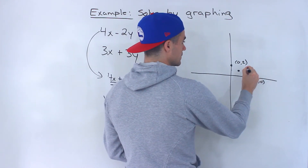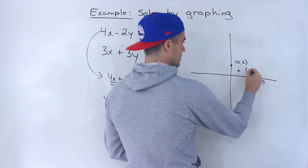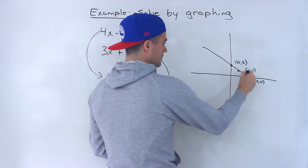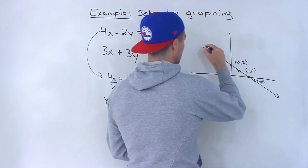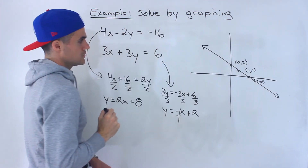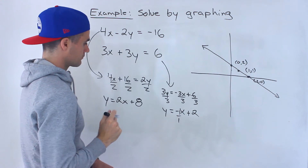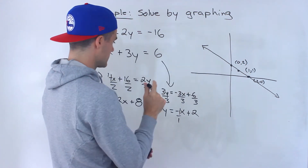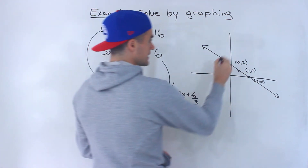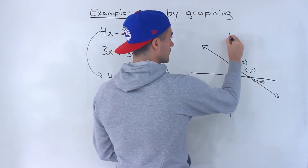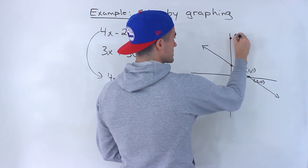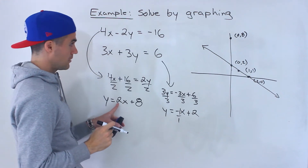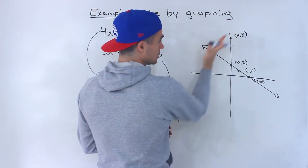Let's write these down and join these points. Now let's see how y equals 2x plus 8 looks on this graph relative to the other line. So 8 is going to be up here — that's (0, 8). Notice this is a positive slope of 2, so this line is going to look like this.